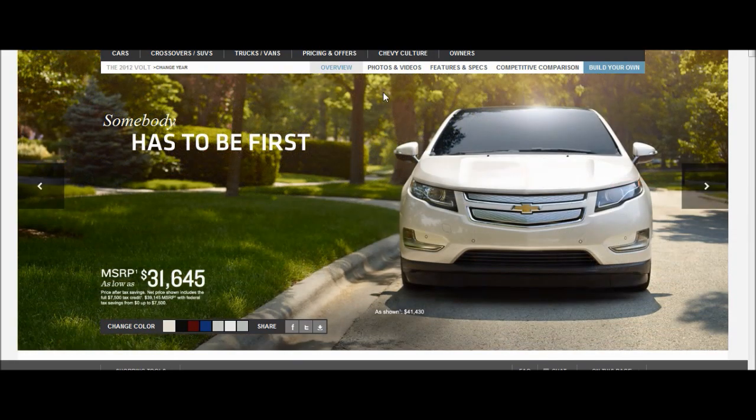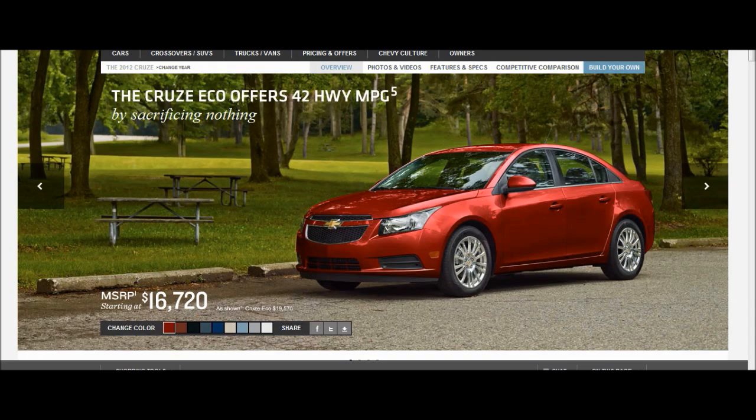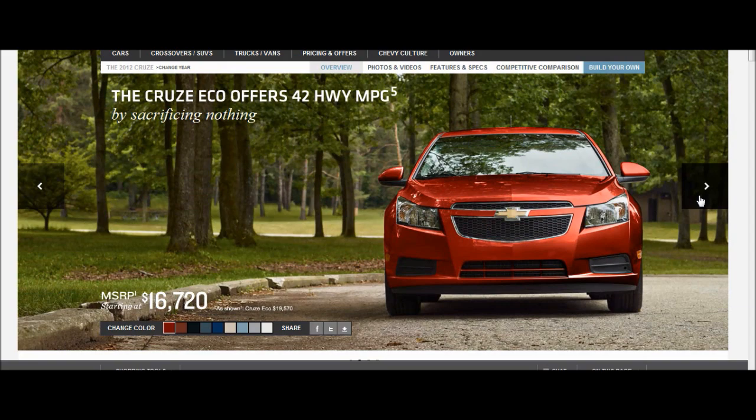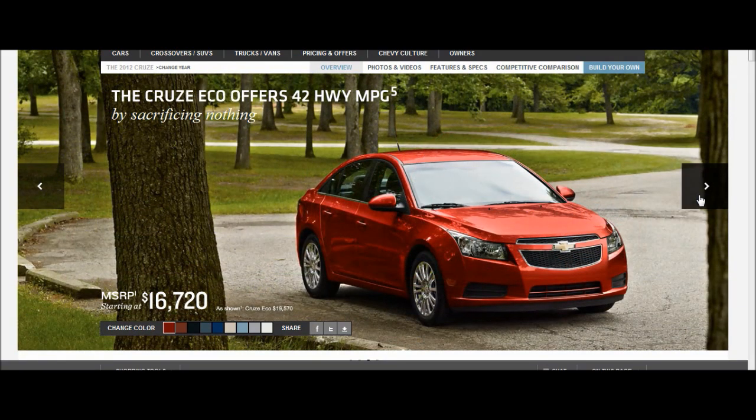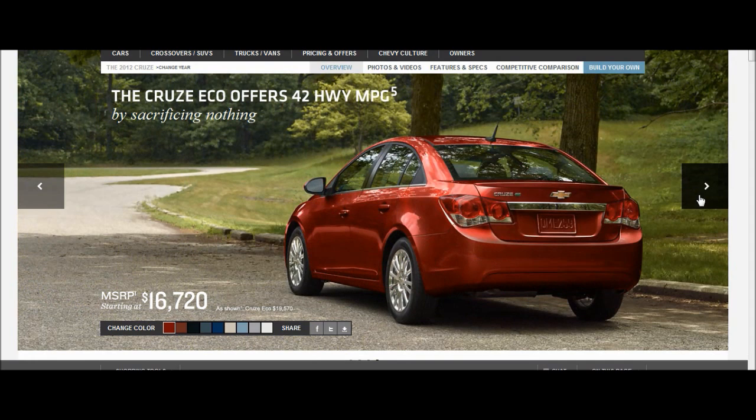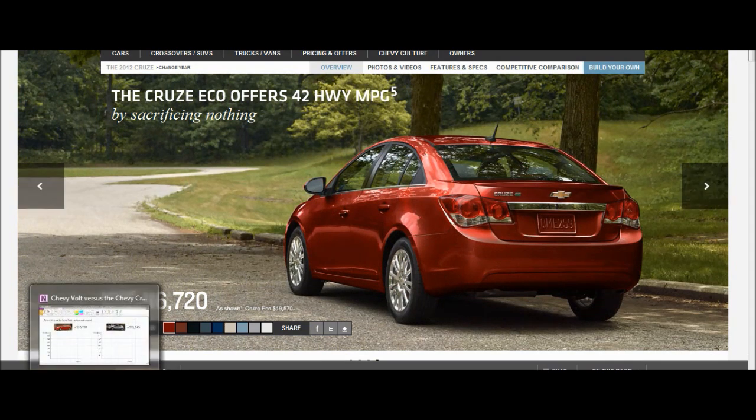The other car we're going to be talking about today is the Chevy Cruze. At first glance, the Chevy Cruze looks a lot like the Chevy Volt. It's a four-door city car, perfect for a family. But notice the price tag. It's almost half the price of the Chevy Volt. So in our analysis during this lesson, we're going to be examining the reasons for the differences in price between these two cars. Let's get back to our economic analysis now.